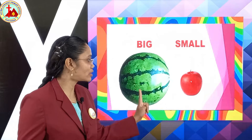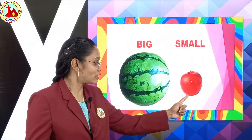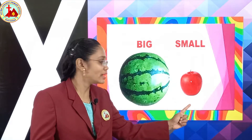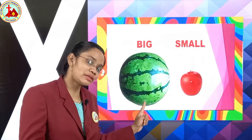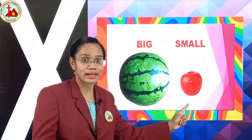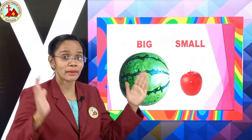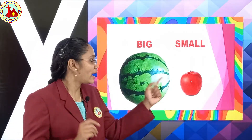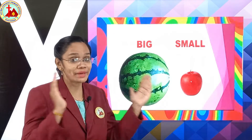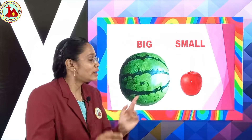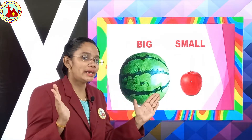See, what is this? It is a watermelon. And what is this? It is an apple. A watermelon and an apple. Watermelon is big, and apple is small. So, the opposite of big is small.